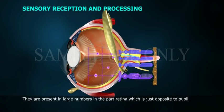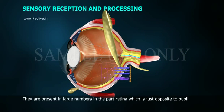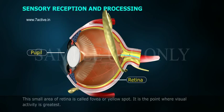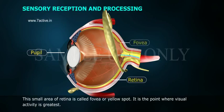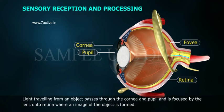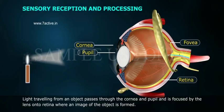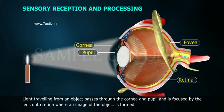Cones are present in large numbers in the part of the retina just opposite to the pupil. This small area of the retina is called the fovea or yellow spot. It is the point where visual activity is greatest. Light traveling from an object passes through the cornea and pupil.